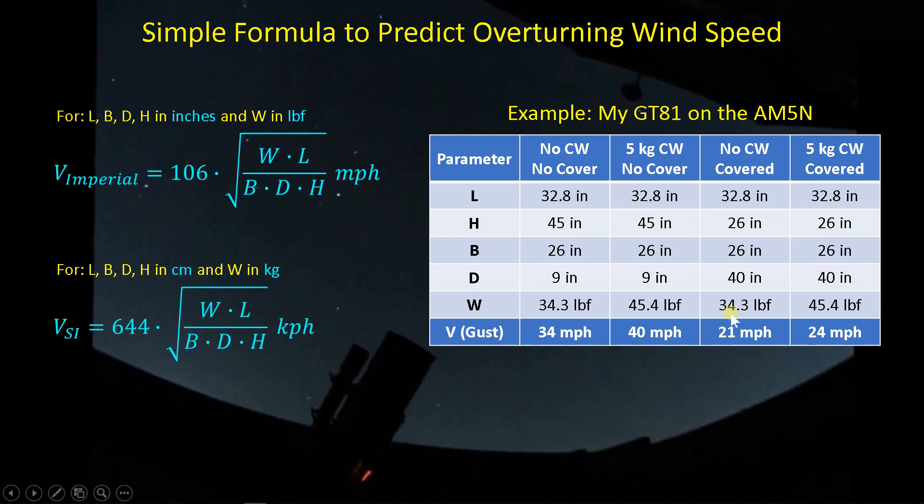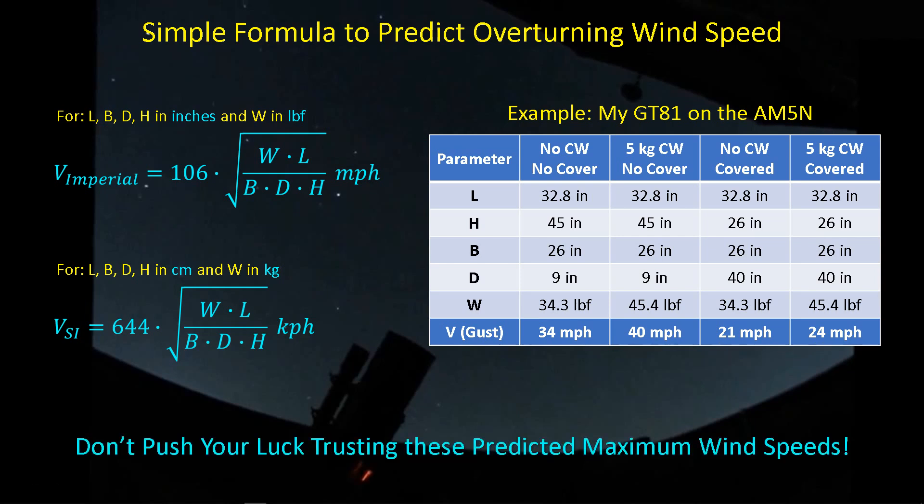And then if we put the cover on it, the wind speed required to push the telescope over is quite a bit lower here. It's actually pretty darn scary. When you don't have the counterweight and you're covered, you're down at 21 miles per hour, which is not that much. We're talking about a gust here, not a steady wind. With the 5-kilogram counterweight, it does help you out a bit. It raises you from 21 miles per hour to 24 miles per hour, so be careful if you have one of these AM5Ns, but this is where that low weight can come back and bite you.